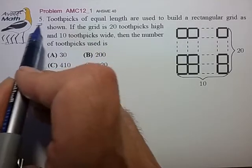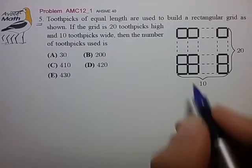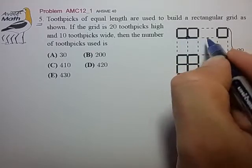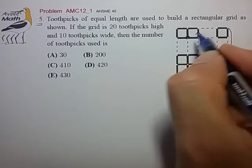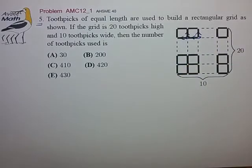This is one of the simpler problems from the AMC 12, so there are probably a couple of ways to count this. The first way that occurred to me when I first saw this problem was that I picked out that each of these vertices is accompanied by two toothpicks to the above and to the left of each of these vertices.